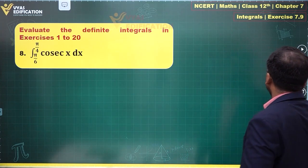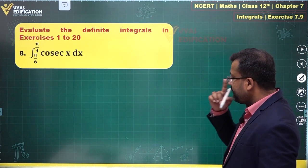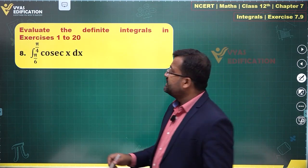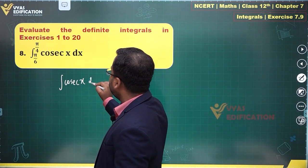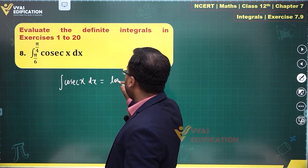In the eighth question we have integral of cosec x. So integral of cosec x, what is that equal to? You remember, the indefinite integral of cosec x is important, and what is that? Log.